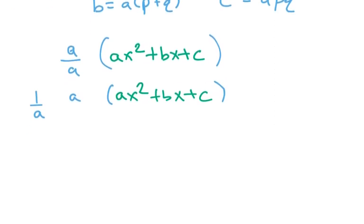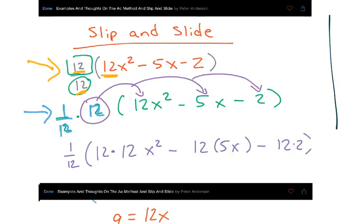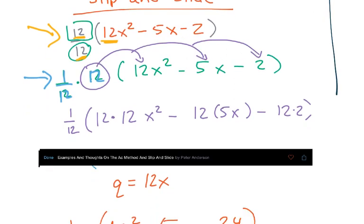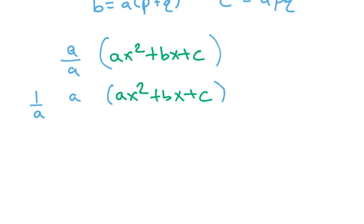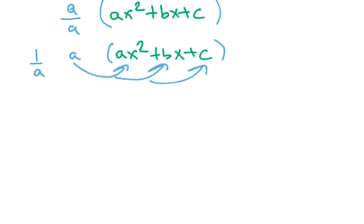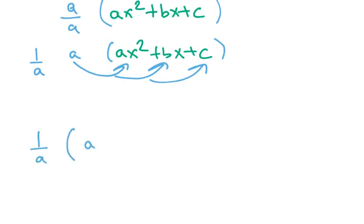So what now? Well, let's see. What did we do last time? So from here, we distributed the a throughout. So here, we're going to do the same thing. We're going to distribute a throughout. What is this going to give me? This is going to give me 1 over a. And in the parentheses, I'm going to have a squared x squared plus abx plus ac.